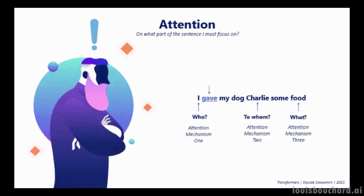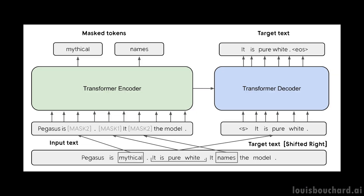I just mentioned attention — well, this was not a coincidence. Attention may be the most important concept behind this model. Indeed, just like GPT-3, this new model also uses the transformer architecture and attention mechanisms. This is where high computation is required.